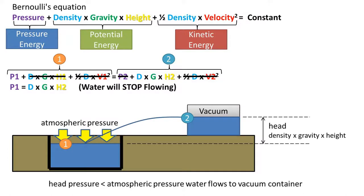So we have that when the pressure at point one, which is atmospheric pressure, is equal to the head pressure, or potential energy, at point two, the water stops flowing. So as long as the atmospheric pressure is greater than the head pressure, water will continue to flow.